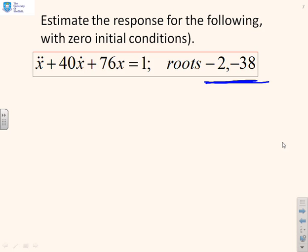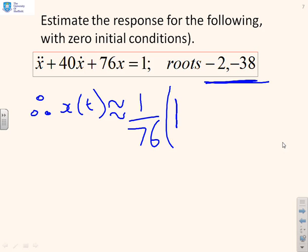Now what I'm going to say is the -38 is much, much faster than the -2 and therefore the response is going to be approximately, this is the key word, 1/76. So that's the steady state gain. I've only used the pole at -2.